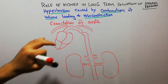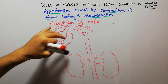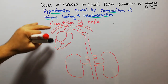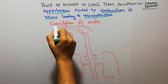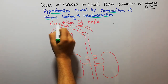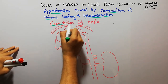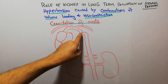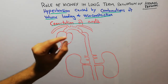The first topic of this series of lectures is coarctation of the aorta. What is coarctation of the aorta? Coarctation of the aorta is simply narrowing of the aorta.